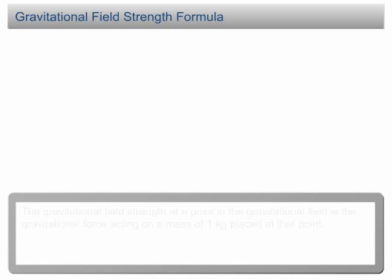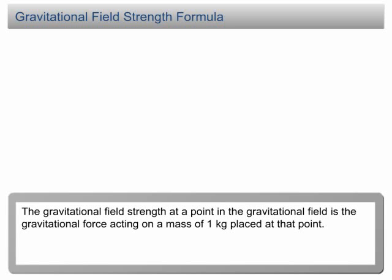We have learned that gravitational field strength at a point in the gravitational field is the gravitational force acting on a mass of 1 kg placed at that point. In the equation,